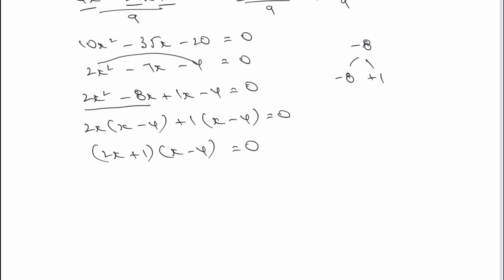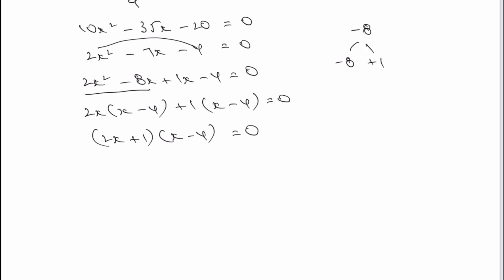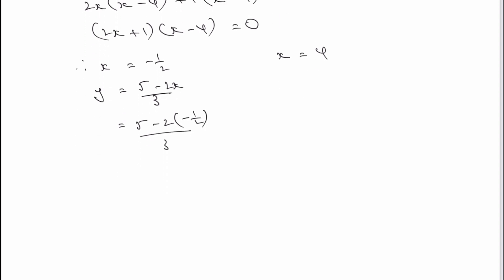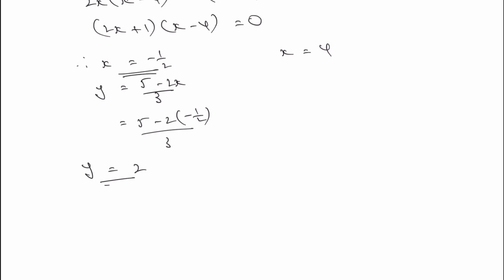At long last I've got my two values of x: x equals minus a half, and x equals positive four. Then it's just a case of putting these back into y equals (five minus two x) all divided by three. For x equals minus a half: five minus two times minus a half, all divided by three — being careful with signs — gives y equals two. So the first solution is x equals minus a half, y equals two.